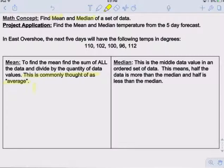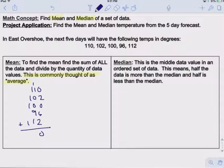So we have 110, 102, 100, 96, and 112. Okay, we add them all up. 2 and 6 is 8, plus 2 is 10, carry the 1. 1 and 2, 11, 13, and correction, 2, 11, 12, carry the 1. 1 and 1 is 2, 3, 4, 5. So the total is 520.